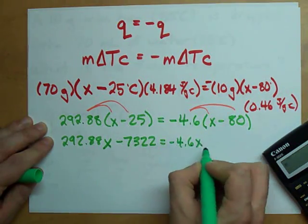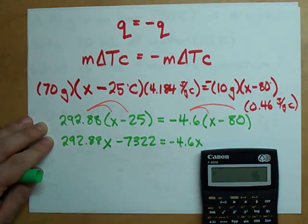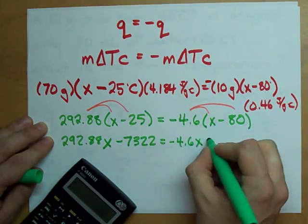There's 292.88x and 292.88 times negative 25 gives me minus 7322, negative 4.6x, negative 4.6 times negative 80 gives me 368.